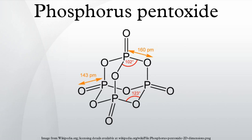Preparation. P4O10 is prepared by burning elemental phosphorus with a sufficient supply of air: P4 + 5O2 → P4O10. For most of the 20th century, phosphorus pentoxide was used to provide a supply of concentrated pure phosphoric acid. In the thermal process, the phosphorus pentoxide obtained by burning white phosphorus was dissolved in dilute phosphoric acid to produce concentrated acid.